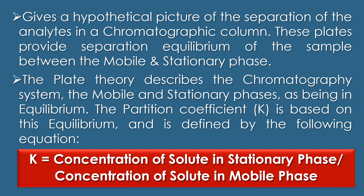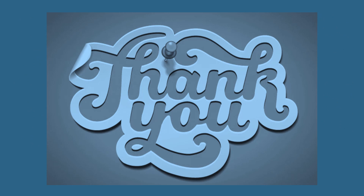The plate theory describes the chromatography system — the mobile and stationary phases — as being in equilibrium. The partition coefficient K is based on this equilibrium and is defined by: K = concentration of the solute in stationary phase divided by concentration of solute in mobile phase. K is assumed to be independent of concentration and can change if experimental conditions are changed, for example if temperature is increased or decreased. As K increases, it takes longer for solutes to separate. The retention time and retention volume can be measured and used to calculate the K value. That's all about the theories of chromatography. Thank you for your support.